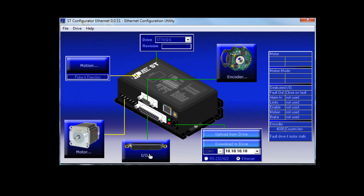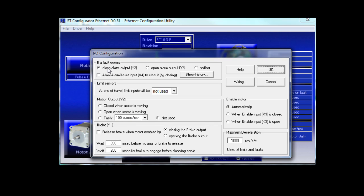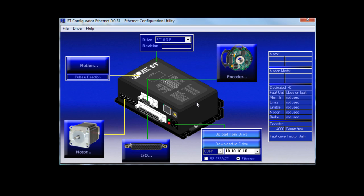Let's bring up the I/O settings now. I want to choose close alarm output if a fault occurs. That's output Y3 by default, which is what we've wired our LED to. Now we click download to send the settings to the drive.